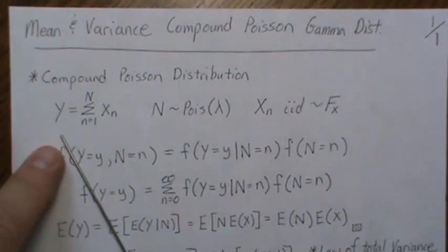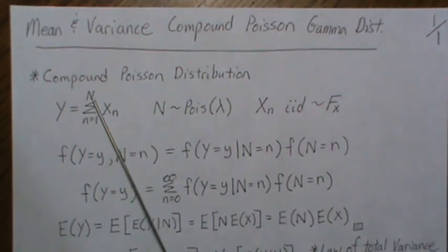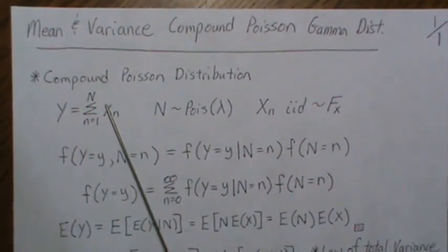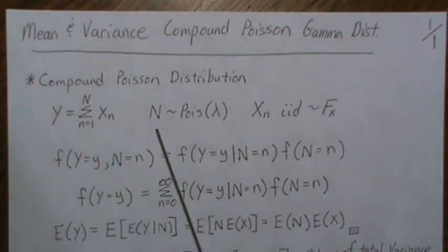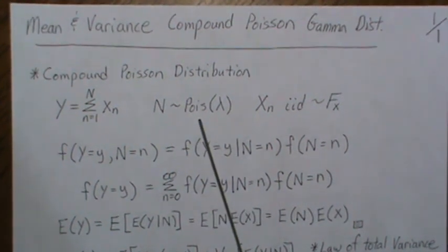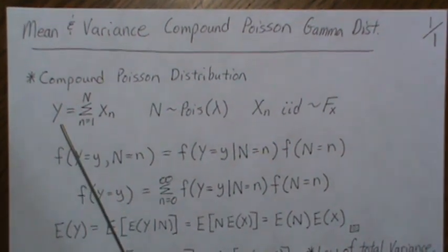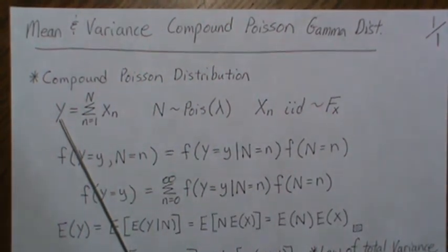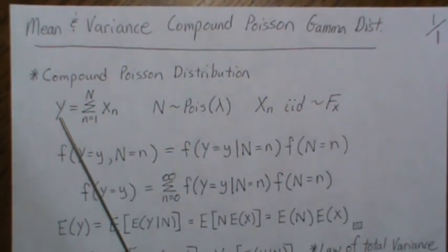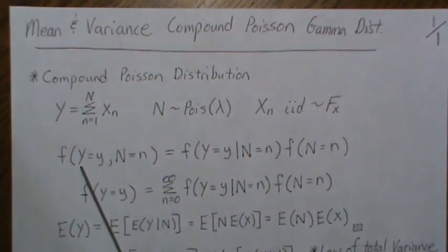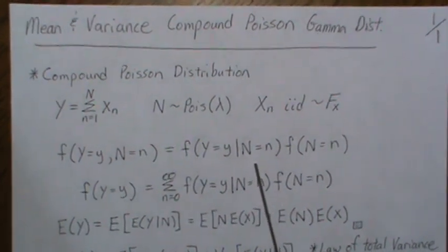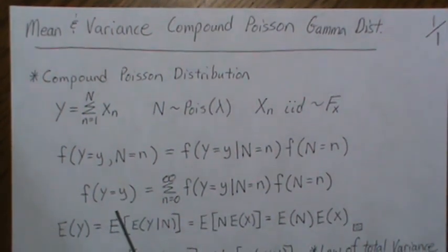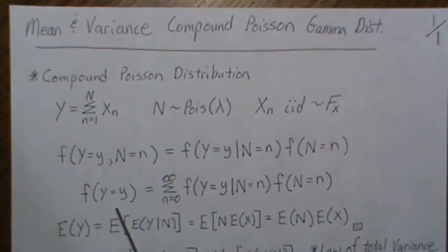A compound Poisson distribution means we have some variable Y that's the sum of some variable X. X is distributed with F, so it can be discrete or continuous, but the number of how many we sum of this variable — cap N — is a random variable that follows a Poisson distribution, so we don't know how many are summed beforehand. Y is called a compound Poisson distribution, and the density is found by taking the joint distribution of Y and N, writing it conditionally, then integrating out N, which leaves Y.